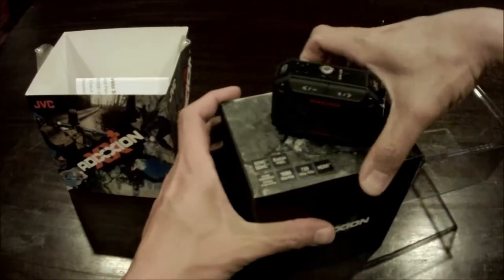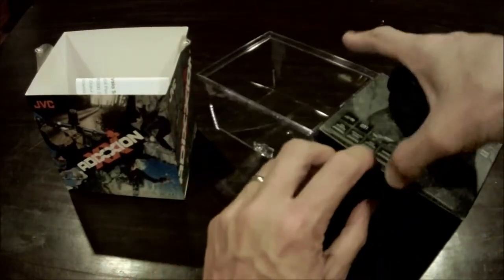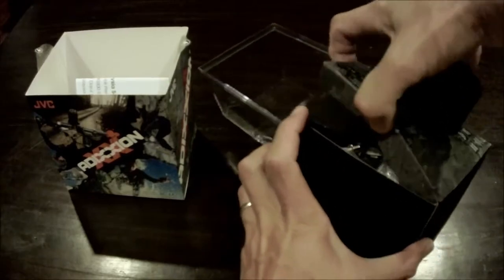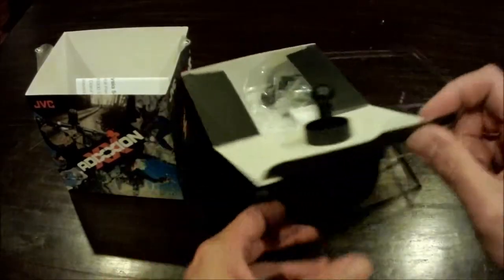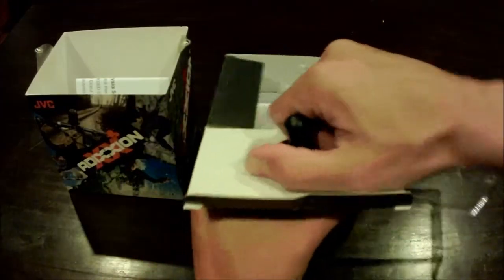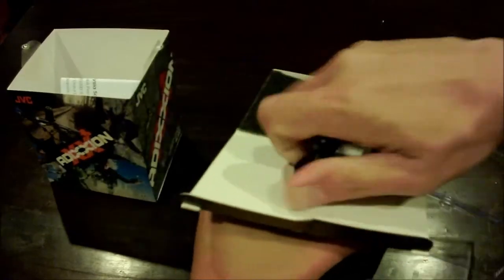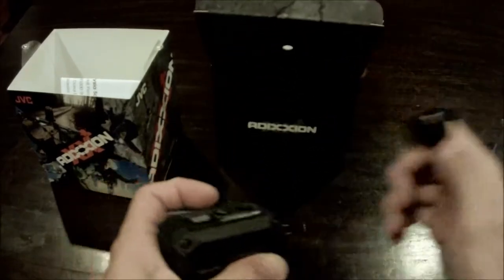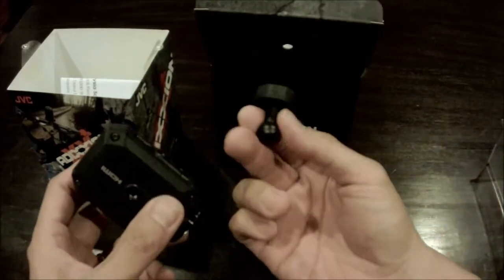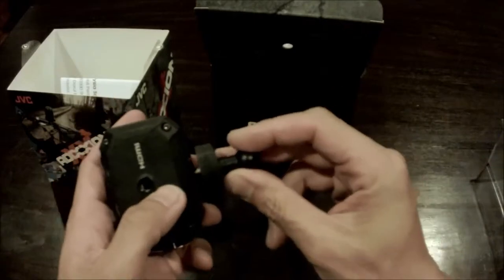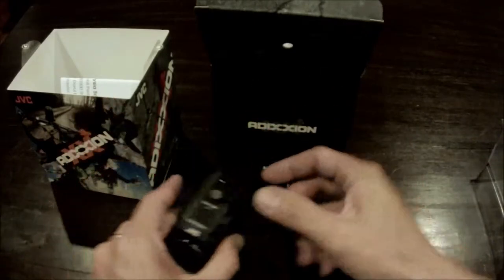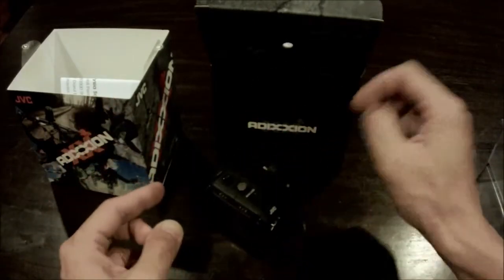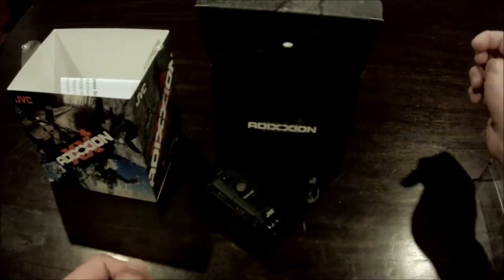So this is the XA1, XA2, sorry. So let me press, this is going to be one of the attachments, the wide angle attachment as well. So you have the camera, the attachment, what else is inside here?